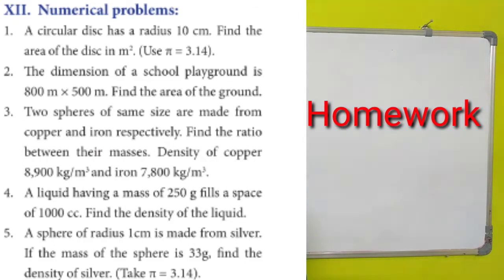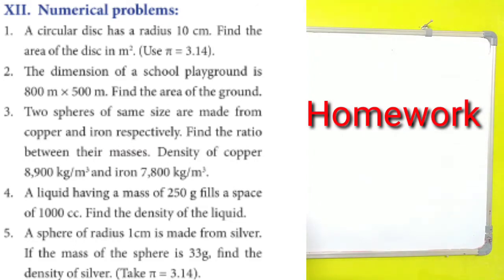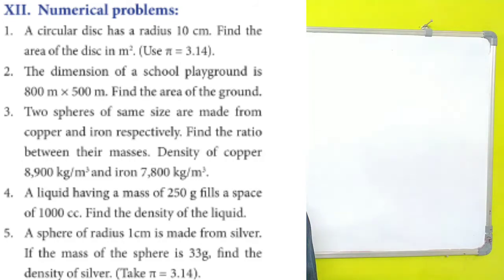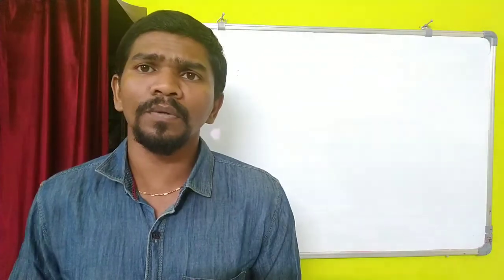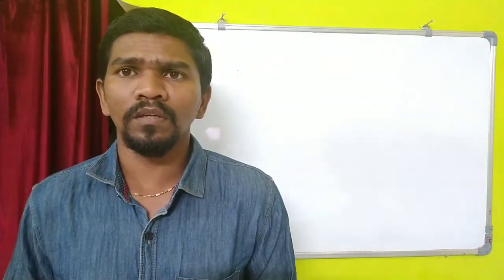Fifth problem: a sphere of some radius is made up of silver. If the mass of the sphere is 33 grams, find out the density — mass divided by volume equals density. Please try it and comment below in the next video. I hope this will be useful for students. If you want to ask anything, please comment below. Let's go to the next class.